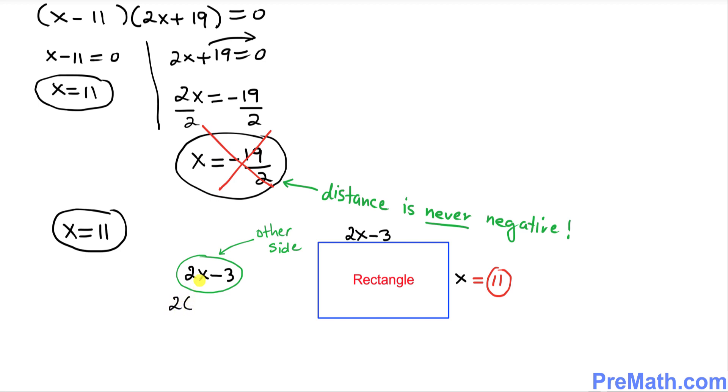So this becomes 2 times 11 minus 3. So this is 22 minus 3 equals 19. So that means this side turns out to be 19 feet.